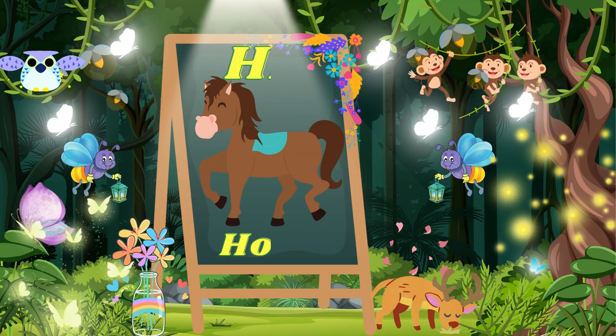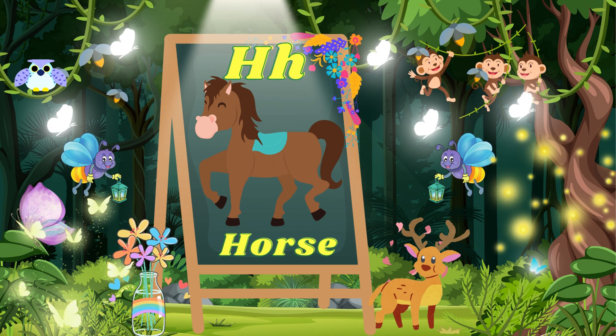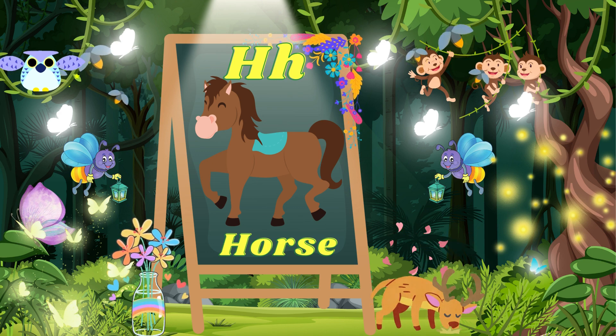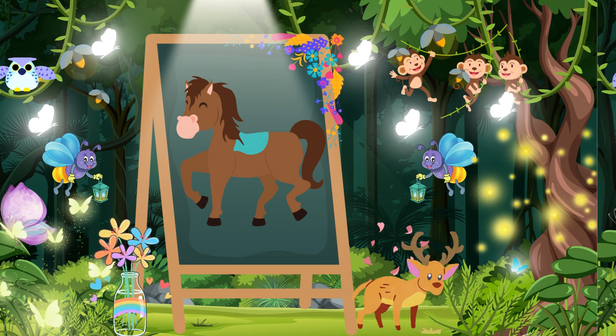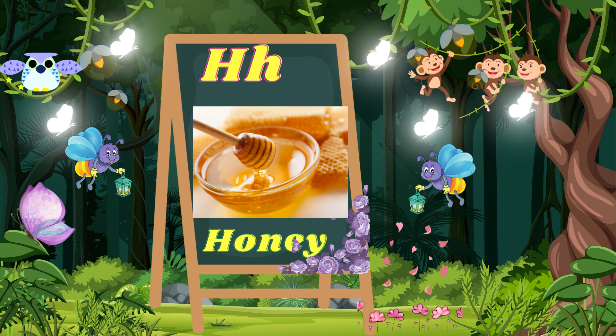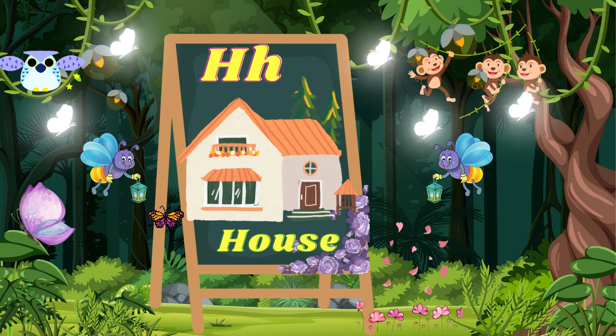The first word which starts from the H alphabet is horse. Repeat that: H for horse. The second word which starts from the H alphabet is honey. Repeat that: H for honey.